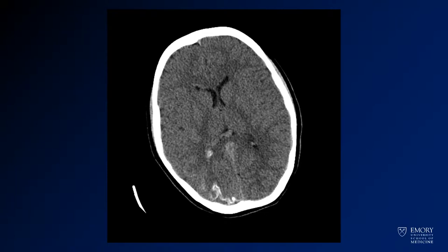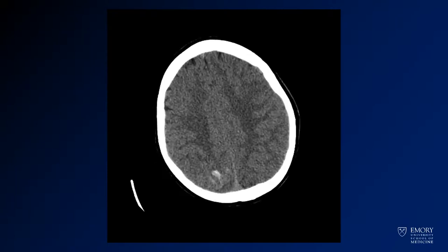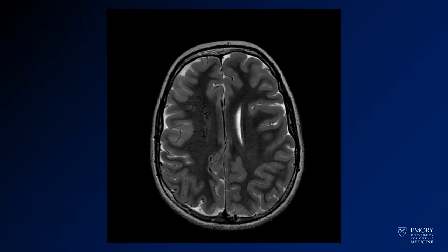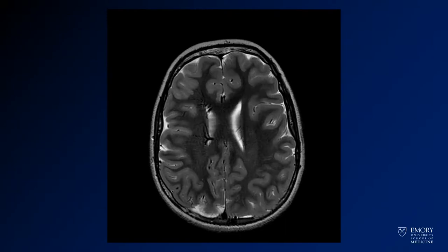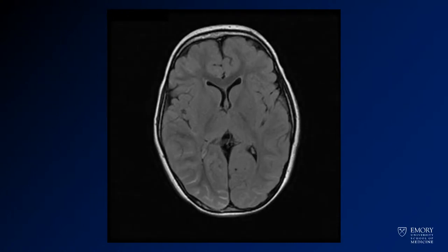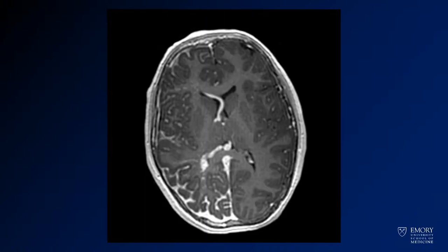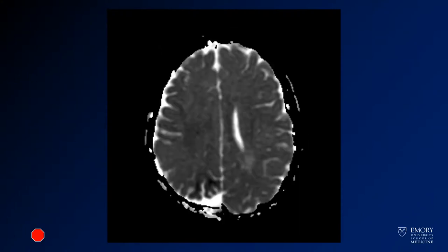Here we have some images from CT. Now we move on to MR. These are T2-weighted images. This is a FLAIR image. Now post-contrast images. And finally an ADC image from Diffusion Rate Imaging.